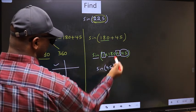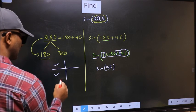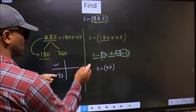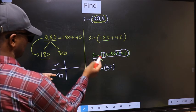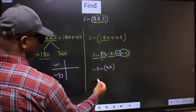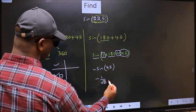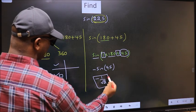Here we have plus, that means the angle lies in the third quadrant. In the third quadrant, sine is negative, so we should put negative. Negative sin 45 is 1 by root 2. This is our answer.